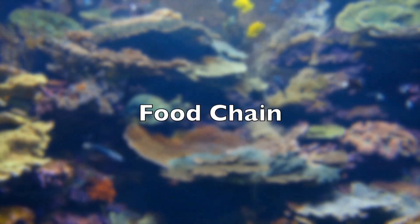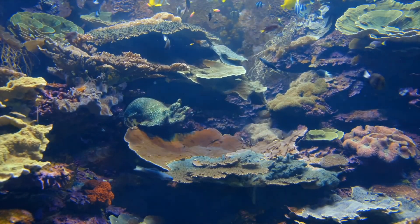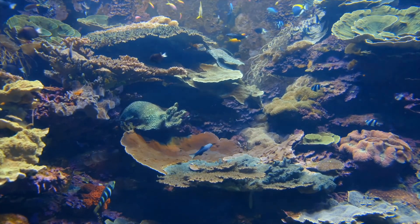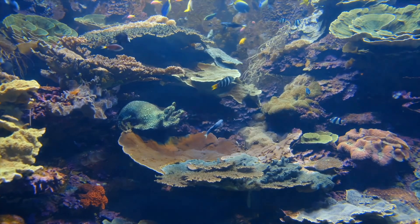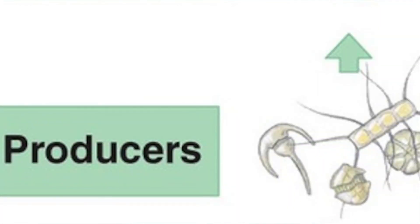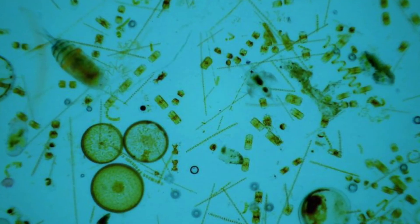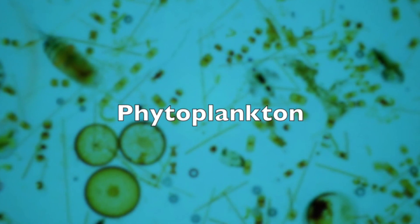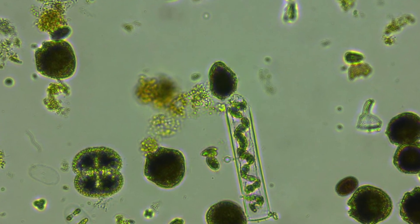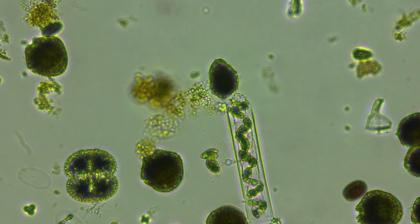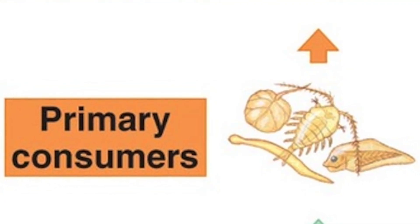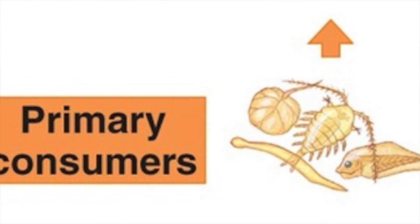The food chain, or food web, is an interconnected system of all animals in an ecosystem showing connections to what they eat. At the very bottom of this chain are the producers — organisms that photosynthesize and make their own food, like phytoplankton. Phytoplankton are microorganisms that live in ocean water and create their own food from sunlight. These small organisms are then eaten by a primary consumer, like zooplankton — small organisms that drift in the ocean.